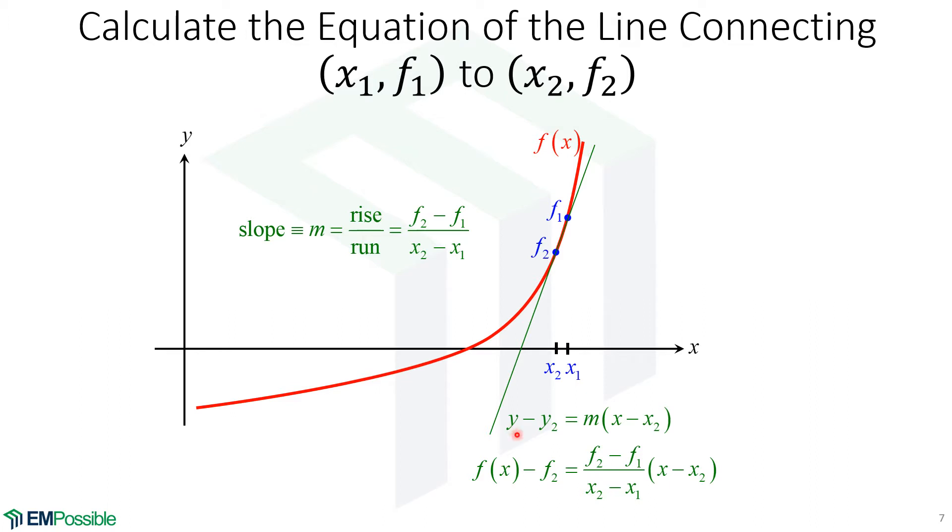So the equation of the line is y minus the y value of some point along that line equals m, the slope, times x minus the x value of some point on the line that matches this y value. So here's the equation for a line. It needs a slope, and it needs one point, x and y.